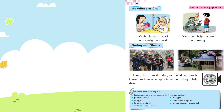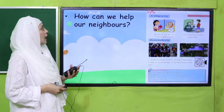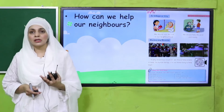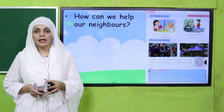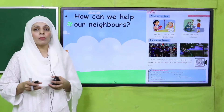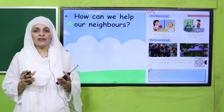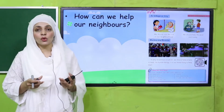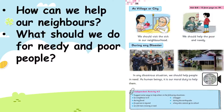Then we discussed ke kis tarikay se hum logon ko apne irgird help out kar sakte hain. Agar aap village mein hain ya city mein hain, to apne neighborhood mein logon ko kaise help out kar sakte hain? So how can we help our neighbors? By visiting them if they are ill, ya agar unhe koi cheez chahiye aap unhe wo provide karein, wo bimaar hain unhe hospital le jayein, apne area ko saaf suthra rakhein taake kisi ko bhi koi problem na ho.